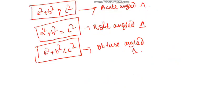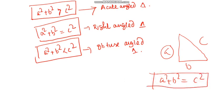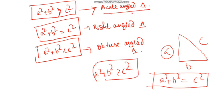Now the Pythagoras theorem. We use the right angle triangle A, B, C. We use: a square plus b square is equal to c square. For an acute angle triangle, a square plus b square is greater than c square.